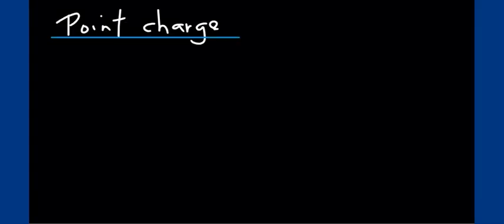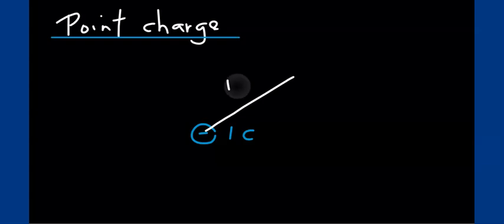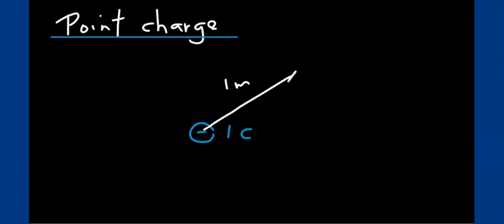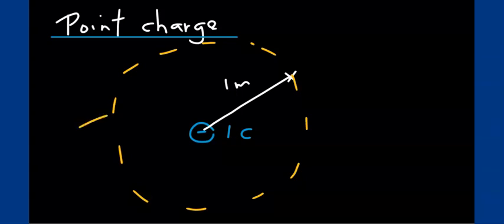To begin with, let's look at a point charge — say, a negative charge with a magnitude of 1 coulomb. We want to determine the electric field that this charge produces at a distance of 1 meter from where the charge is. In order to determine the electric field from Gauss's law, we first have to construct the so-called Gaussian surface. For this system of point charge, the Gaussian surface will be in the form of a sphere.